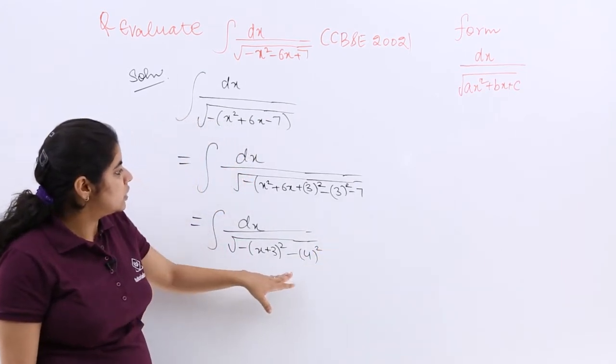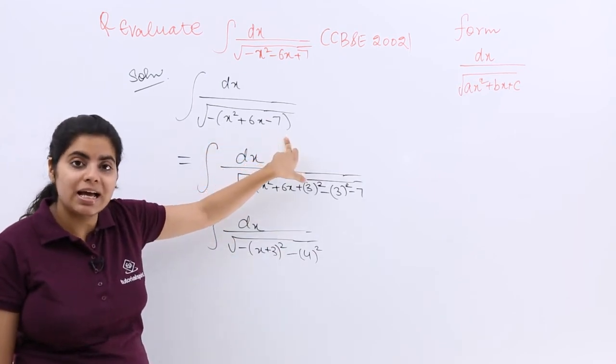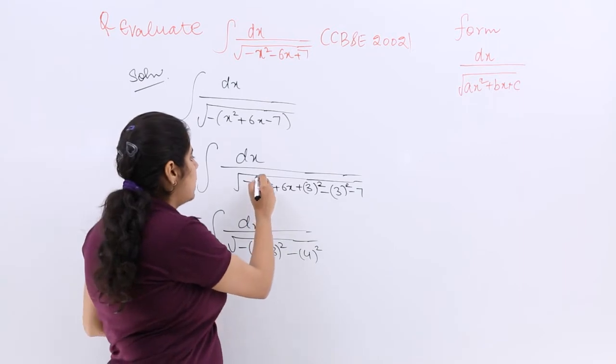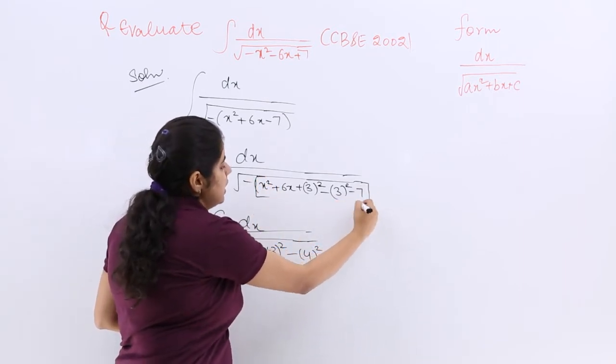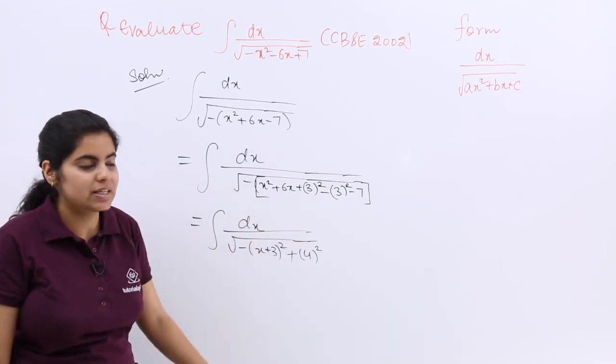Now see here, I have minus sign outside everything, so there has to be made some change. Since minus is outside everything, it is something where I will get plus here because minus will go inside and make it plus.